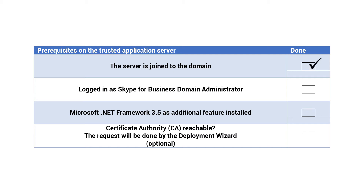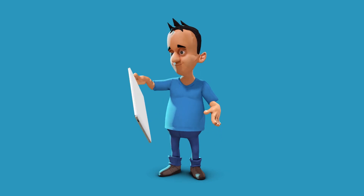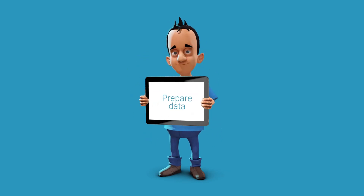The server is joined to the domain. You are logged in as a Skype for Business domain administrator. The Microsoft .NET Framework 3.5 is installed. Is the certificate authority reachable? The request will be done by the deployment wizard on setup. We also recommend preparing all data needed for configuration.